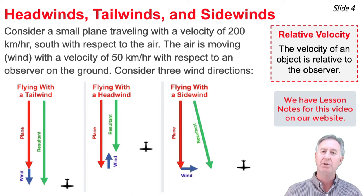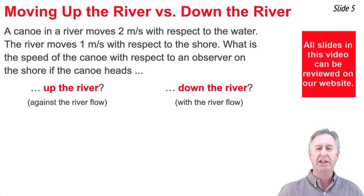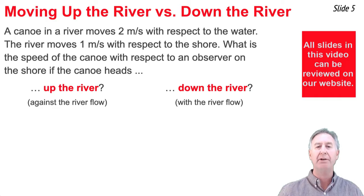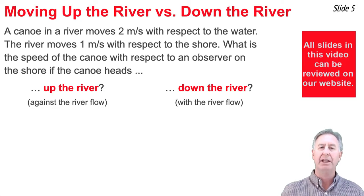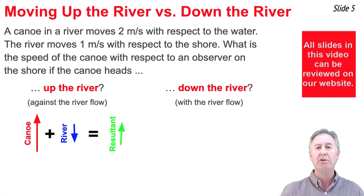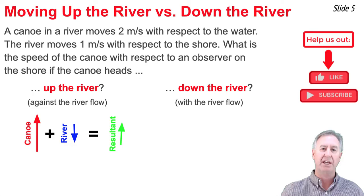Pythagorean theorem would have to be used to determine the resultant velocity as observed by that stationary observer on the ground, and it would be approximately 206 kilometers per hour. As another application of relative velocity, let's consider a canoe that can paddle at 2 meters per second with respect to the water, but it's river water so it's moving south at 1 meter per second with respect to an observer on the shore. In the case of paddling up the river, the boat is paddling against the river flow, so the river velocity subtracts from the boat velocity and the resultant velocity is 1 meter per second north.